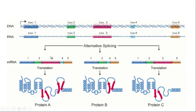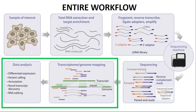Now here is the entire workflow. We take a sample of interest, extract the messenger RNA, and enrich it — because we also have ribosomal RNA, transfer RNA, and micro RNAs in the sample. After extraction comes library preparation, also called complementary DNA library, where the messenger RNA is converted into DNA. After that, sequencing is performed and files are generated. The green color box represents our priority: data analysis.